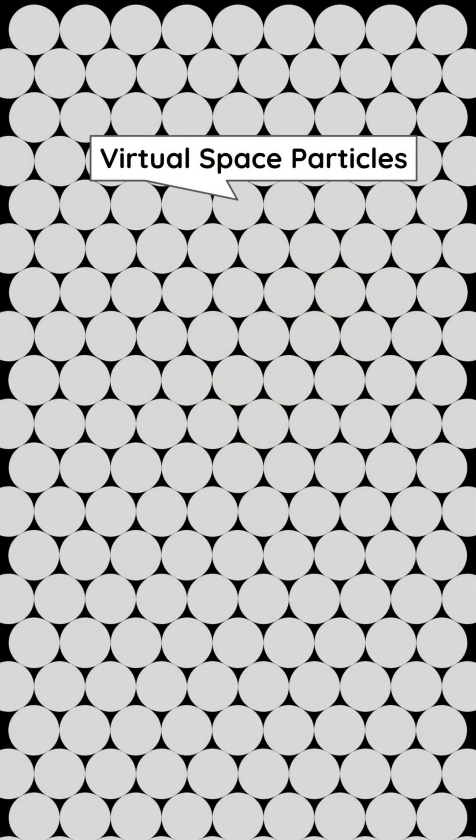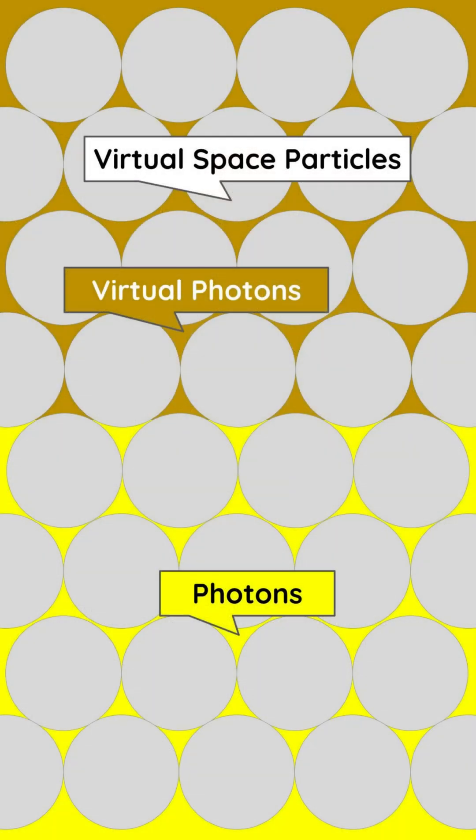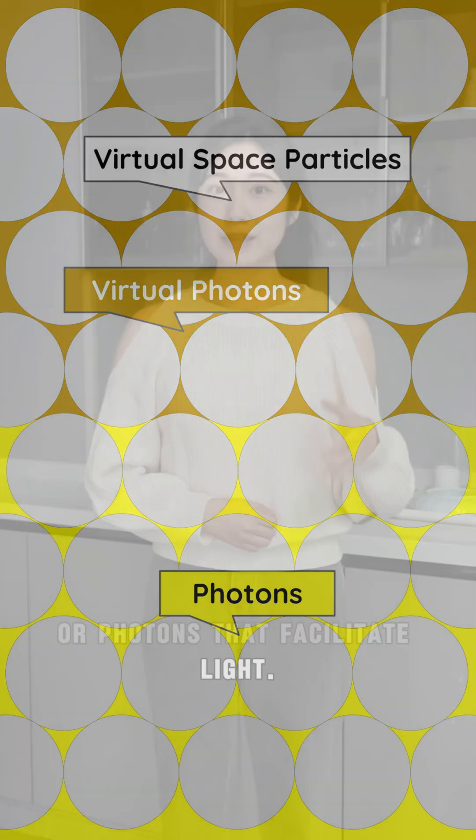These are virtual spheres that fill all of space. They have gaps between them that are filled with virtual photons that facilitate magnetism, or photons that facilitate light.